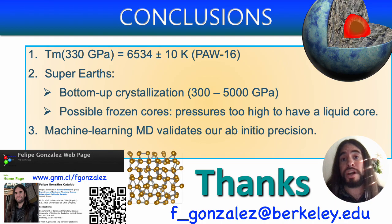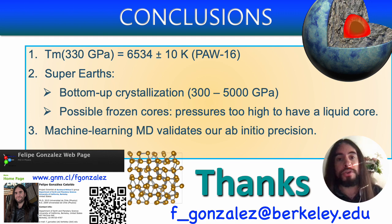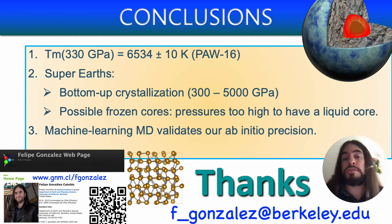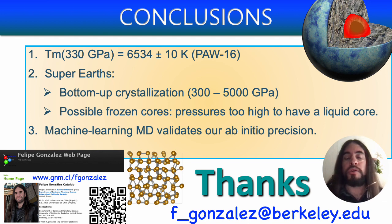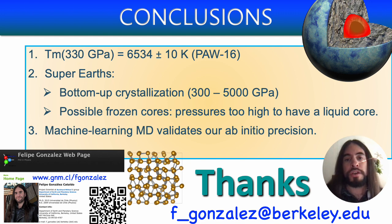We have successfully derived a melting curve for pure iron spanning from 300 gigapascals to 5000 gigapascals. Our calculations indicate that super-earths crystallize from the center and may all have frozen cores, because current models have temperatures too low to maintain a liquid iron core. Our calculations have also been validated by machine learning simulations able to model much larger sizes and longer timescales. Thank you for your attention — we would be happy to take any questions.